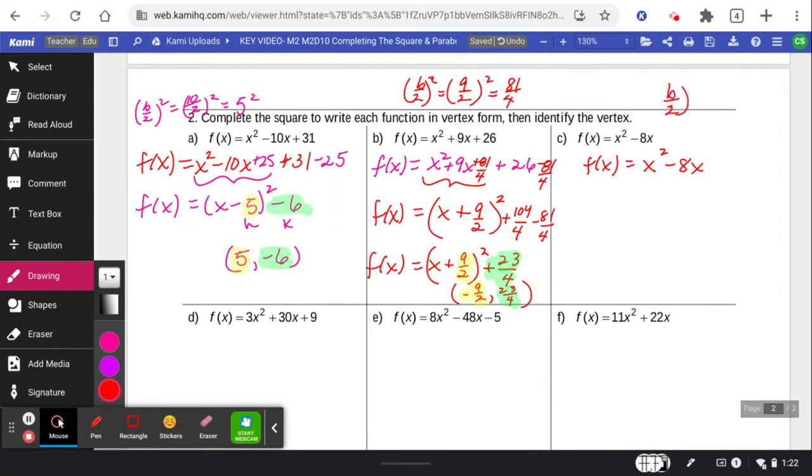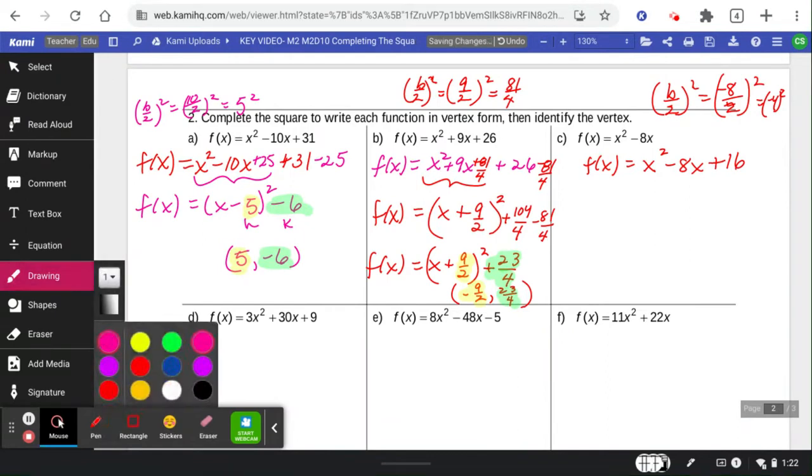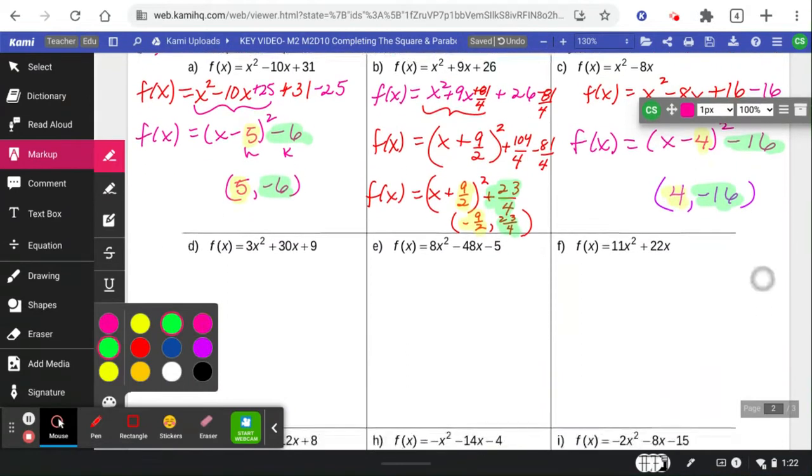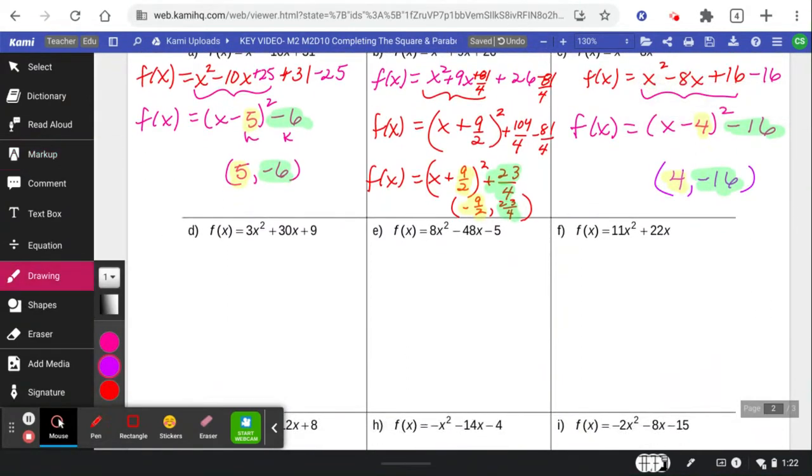So we're going to go off and do our b work, where we take the negative 8 and divide it by 2, which is negative 4 squared, which is 16. If I add a 16, I then have to subtract 16 to balance. This perfect square becomes the x minus 4 squared factors, and then a minus 16 off to the back. My vertex is therefore going to be 4, negative 16 coming from right here. So kind of weird because it didn't have a number at the end, but you got it.